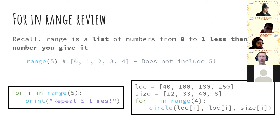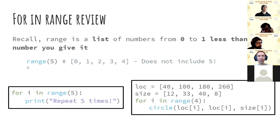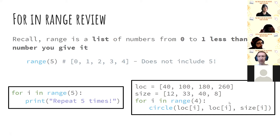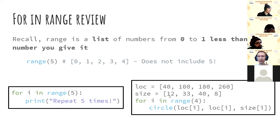So we're going to review a bit of what we went through last session. We had the for-in-range. The range gives us numbers from zero up to one less than the number specified — so range(5) corresponds to zero, one, two, three, four. In the example on the left, this will repeat five times because we have five numbers and i will match up with zero through four. On the right, we're using that variable i as an index to iterate through both lists at the same time — using both the location and size lists to draw a circle.